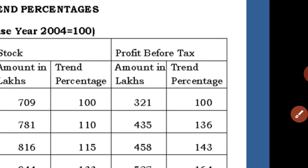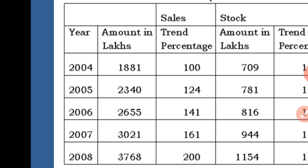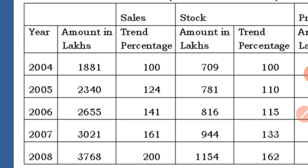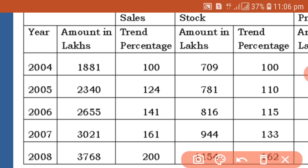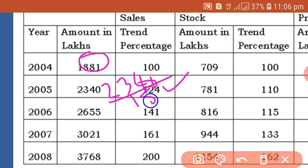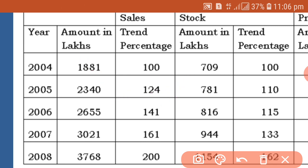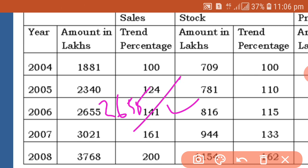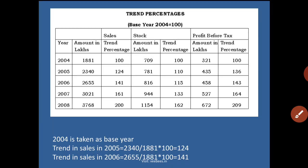In 2005, we show the trend percentage. For example, 124 is obtained as 2340 divided by the base year figure of 1881, multiplied by 100. Similarly, 141 is obtained as 2655 divided by 1881. This is how we prepare the trend analysis statement.